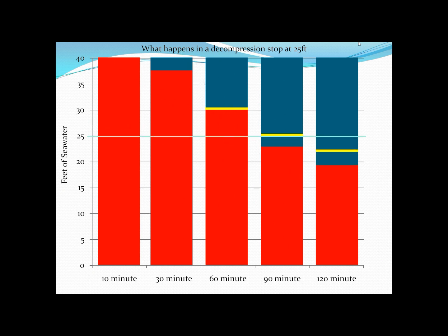What I'm going to do is mark the depth at which we're doing a deco stop. We'll see that the 10 and 30 minute compartments already have a nitrogen loading above 25 feet, as does the 60 minute compartment. So the 10, 30 and 60 minute compartments are going to be off-gassing nitrogen during this 25 foot stop, but the 90 and 120 minute compartments are not yet at 25 feet. So during this decompression stop, they are still going to be on-gassing. We have a situation where faster compartments are off-gassing, but slower compartments are still on-gassing.